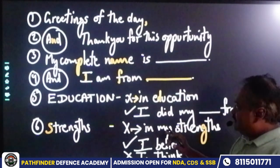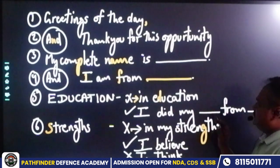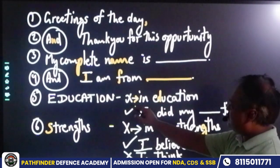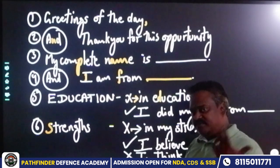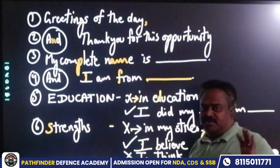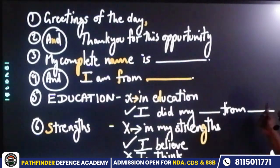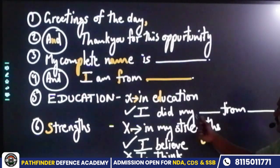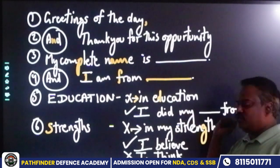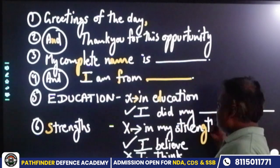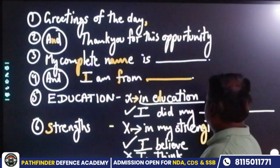Now, education. When we tell our education, we don't need to give an extra heading. In education, we simply say: I did my high school and intermediate from this school and place. We have to keep it flowing — no extra heading like 'In education.' Just say: I did my high school, I did my intermediate. We avoid giving extra headings.